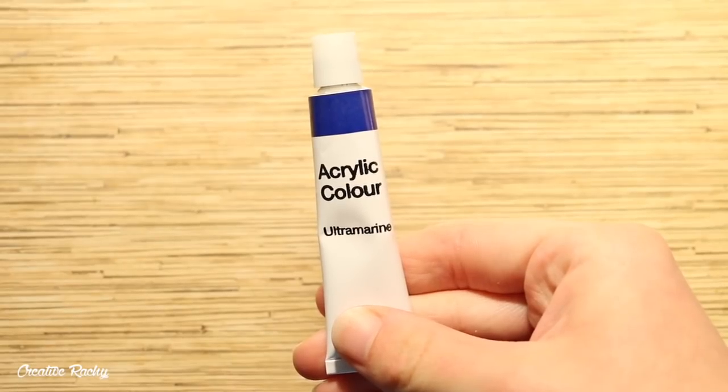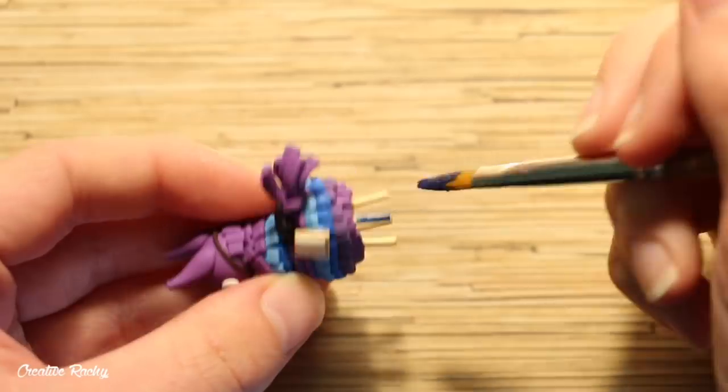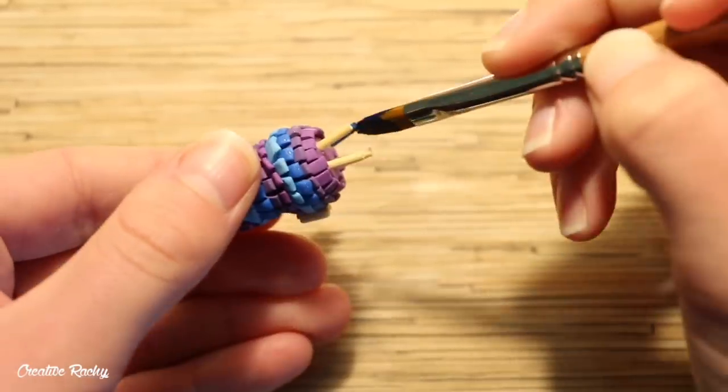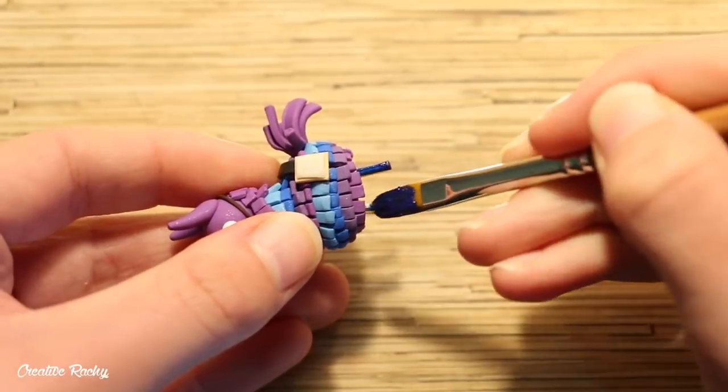After baking, you can take some acrylic paint and then use it to color the legs. I started off with a darker blue, let it dry and then I added some small sections of black paint on the ends for the hooves.